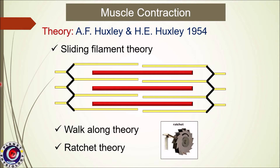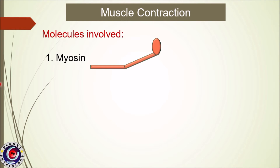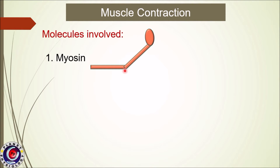Let us quickly revise the molecules involved in the contraction process, which we have discussed in detail in the previous class on structure of skeletal muscle. The first important molecule is myosin. Heads of the myosin molecules protrude out from the myosin filament with the help of an arm, and this structure is called a cross-bridge. The cross-bridge is flexible at two points: where the arm leaves the body, and where the head attaches to the arm.